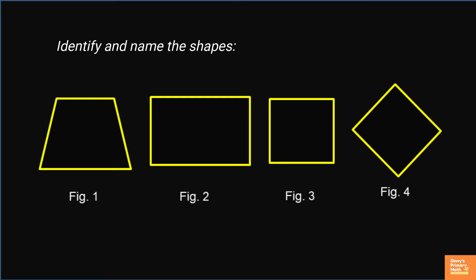Let me spell out. First, trapezium. Second, rectangle. Third, square.